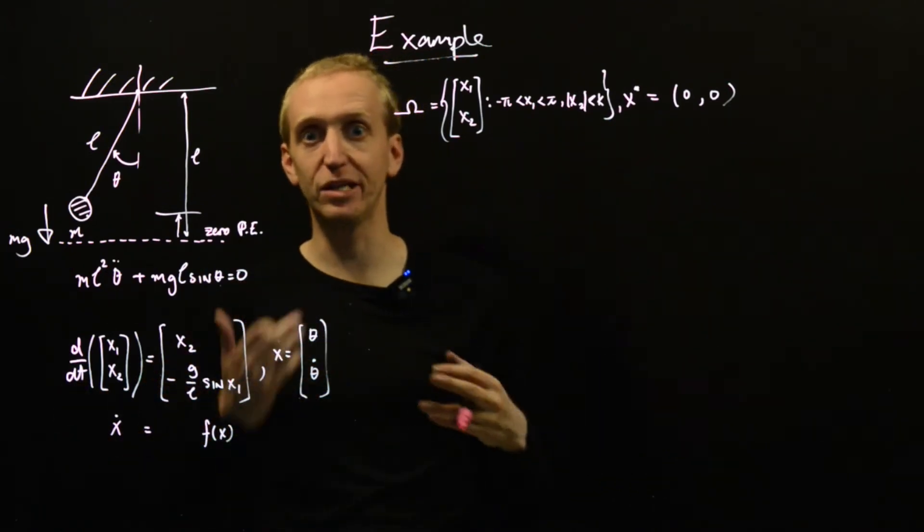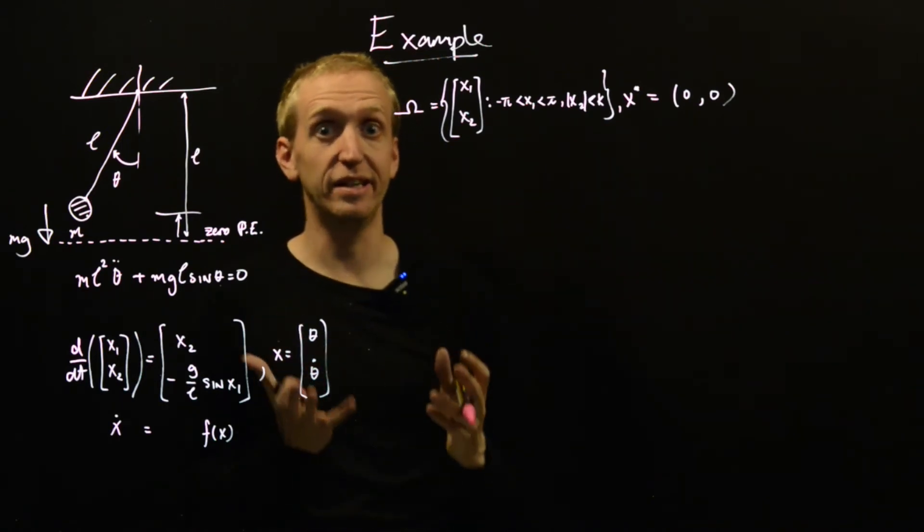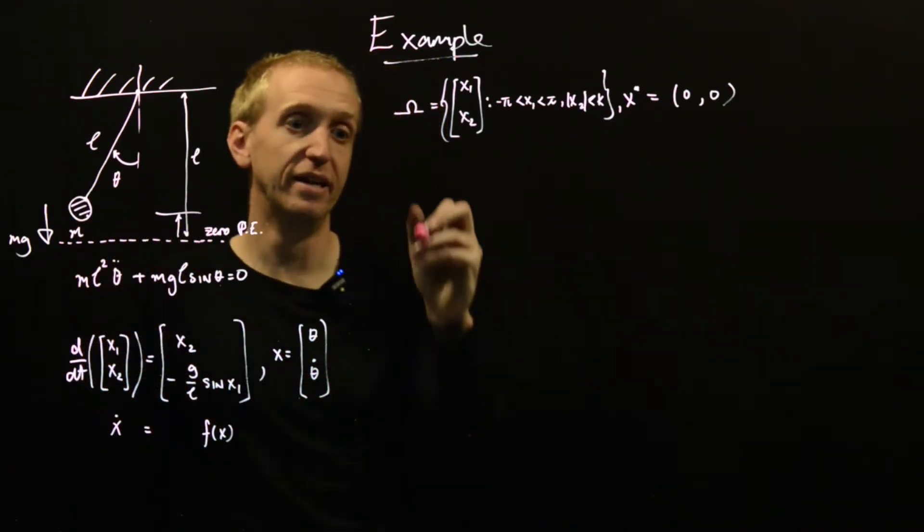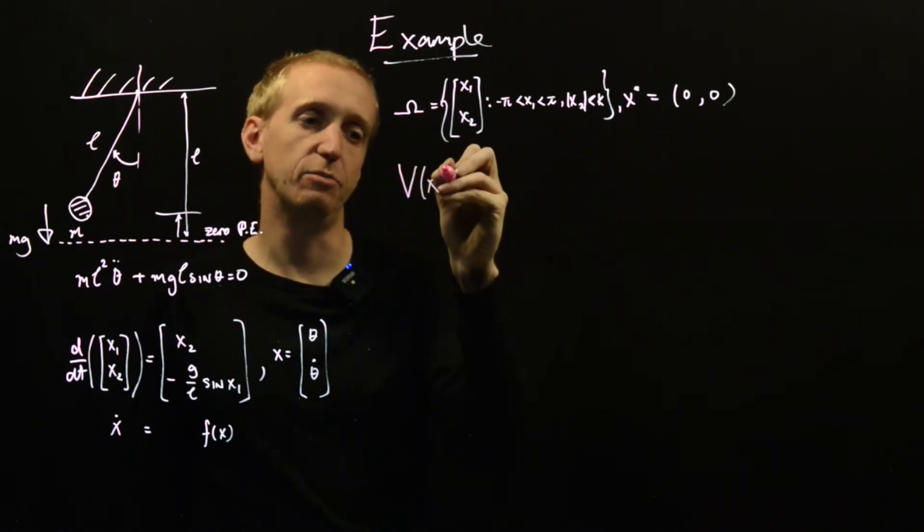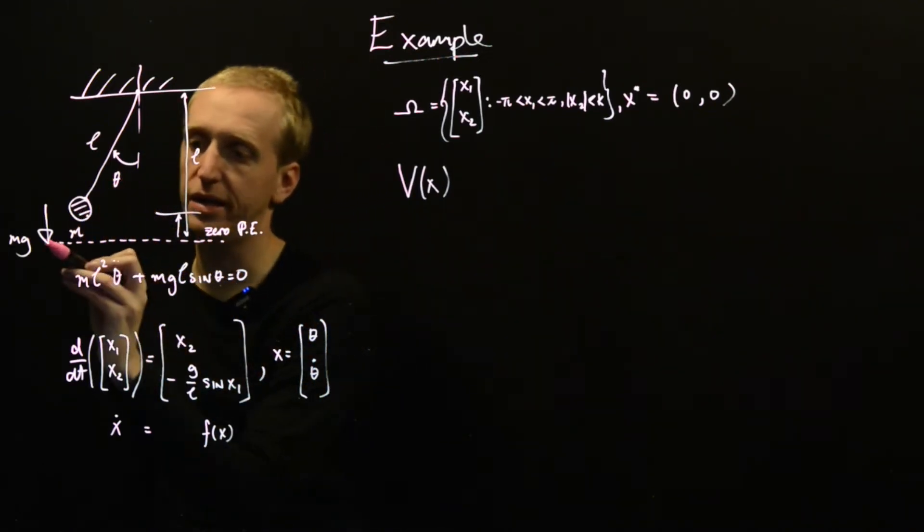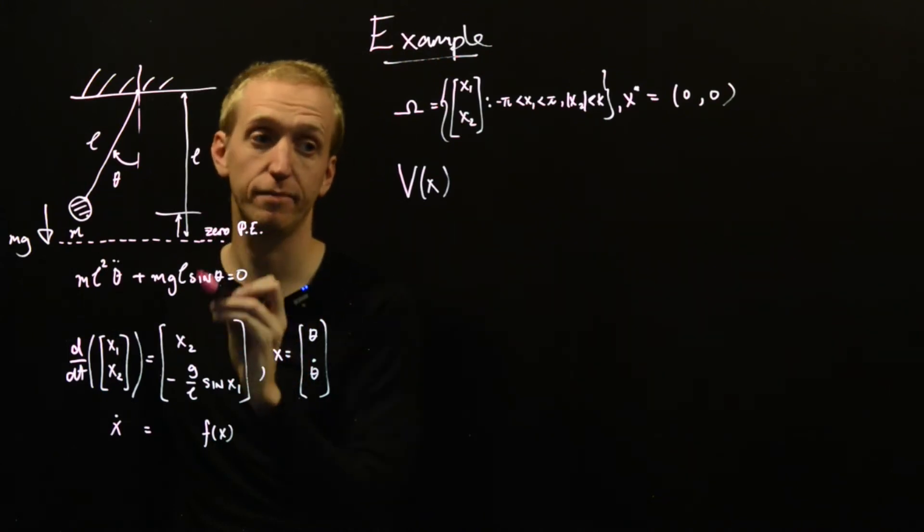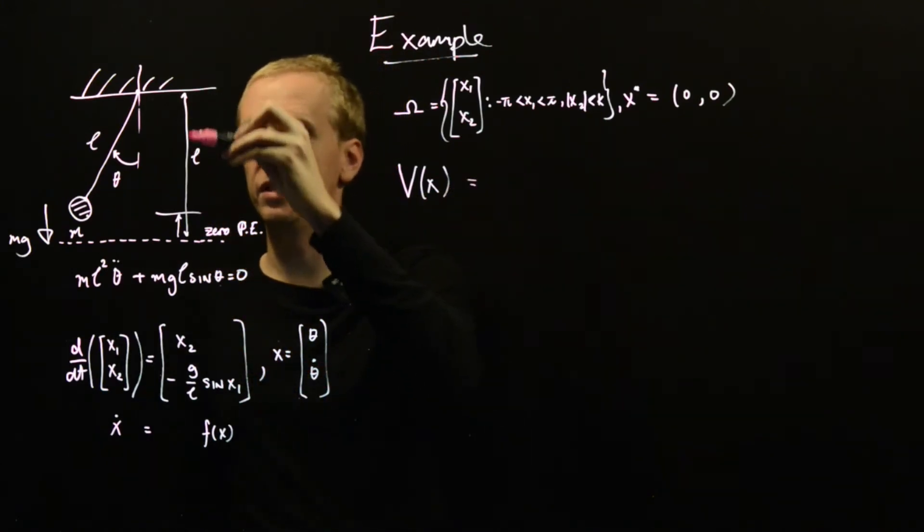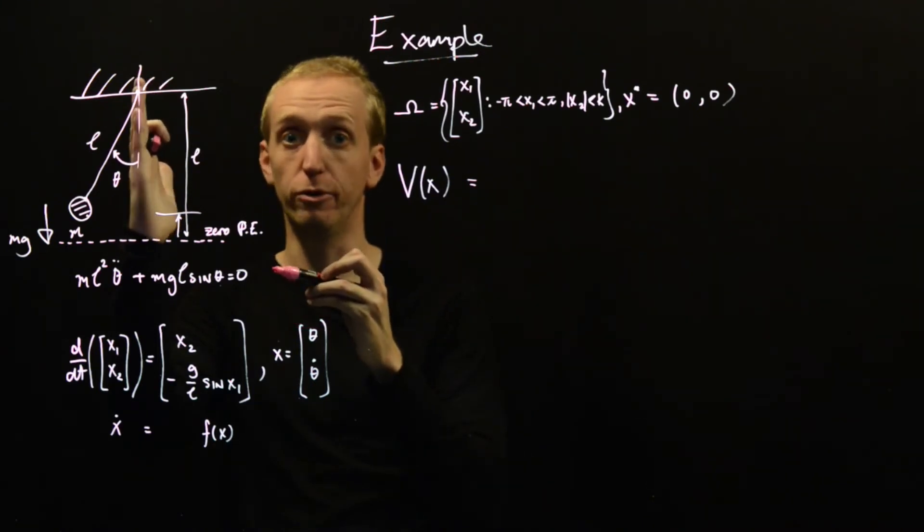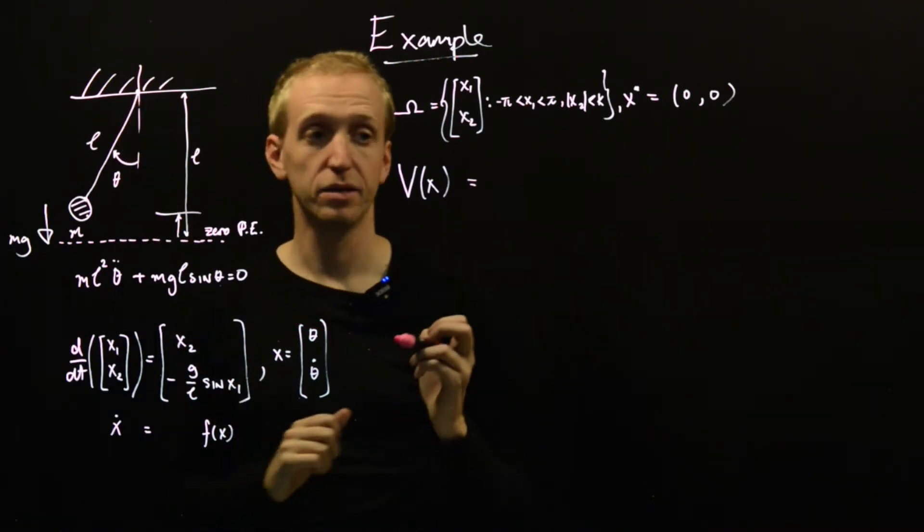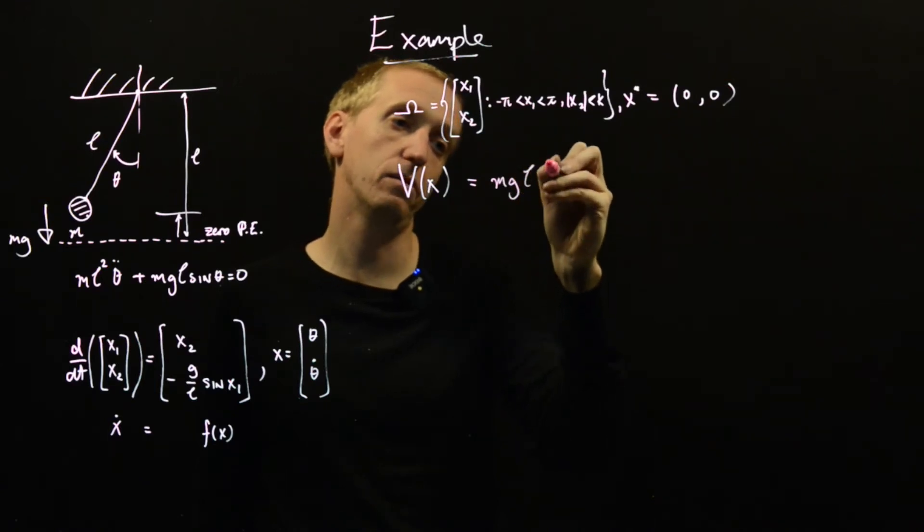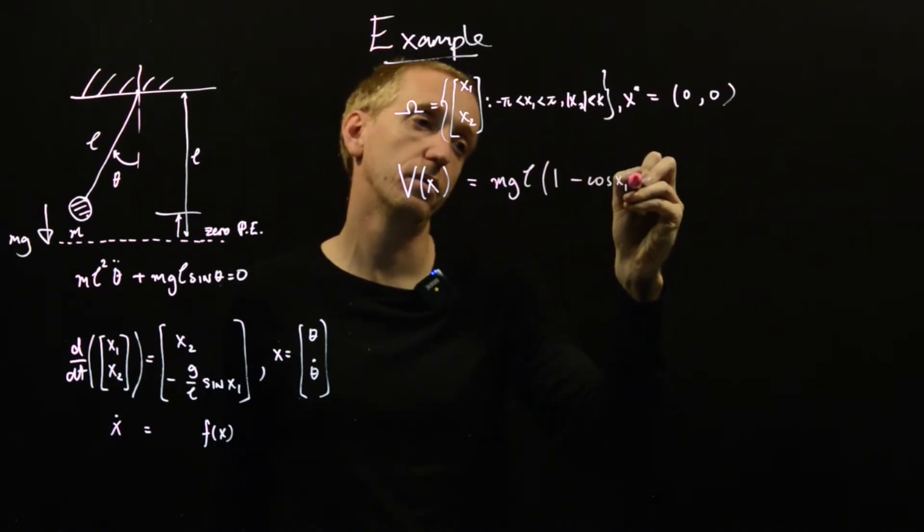Now we need a Lyapunov function. And up to now we've been continually talking about Lyapunov functions like their energy functions. This connection is extremely deep, so we're just going to use the energy as our Lyapunov function. So we're going to set V of x to be equal to the sum of the potential energy and the kinetic energy of this system here. And that's why I've marked on this little line here, this line of zero potential energy.